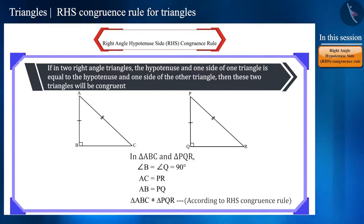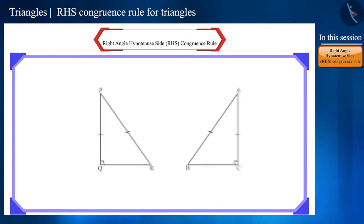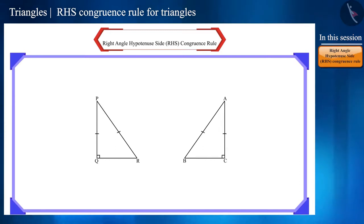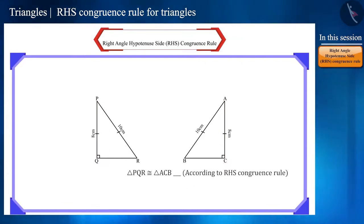For practice, we can draw some pairs of right angle triangles. For example, draw two right angle triangles where the hypotenuse is 10 centimeters and one side is 8 centimeters. Will the two triangles be congruent? Yes.